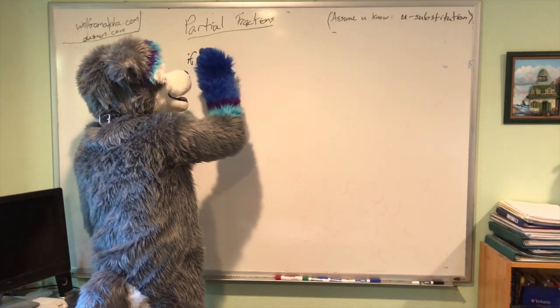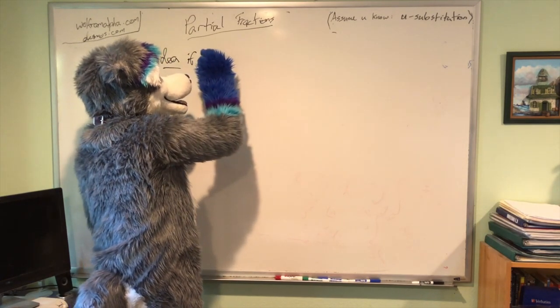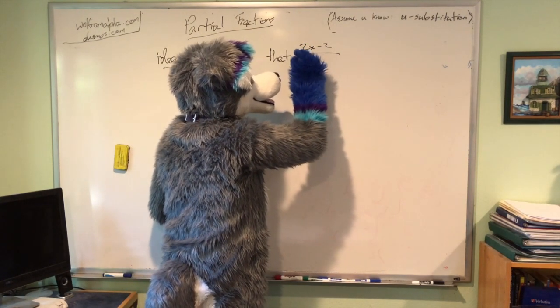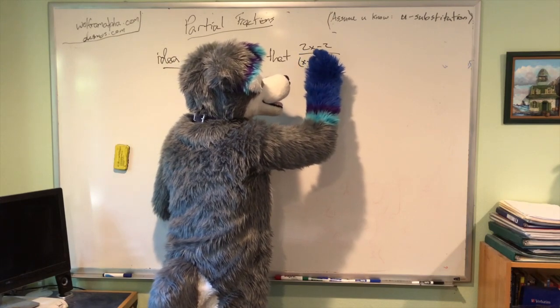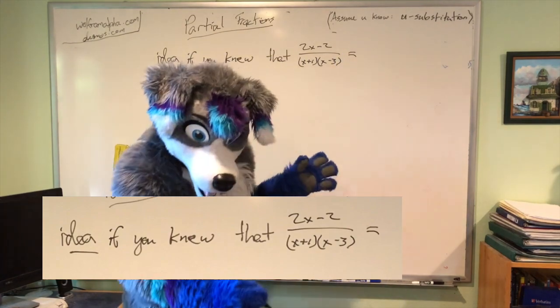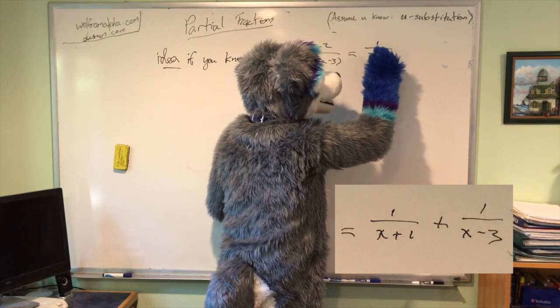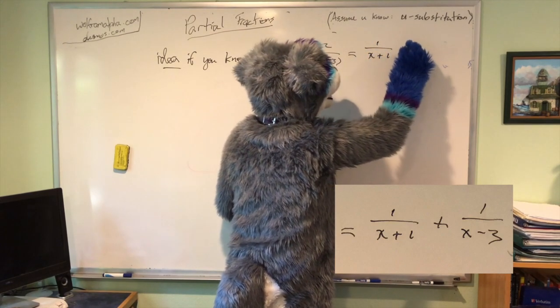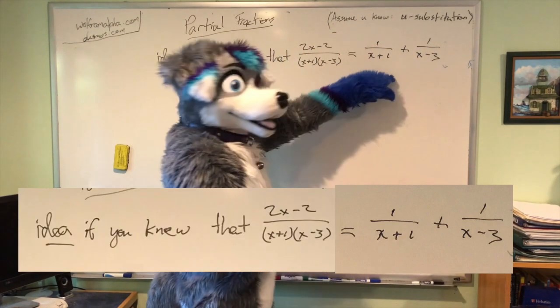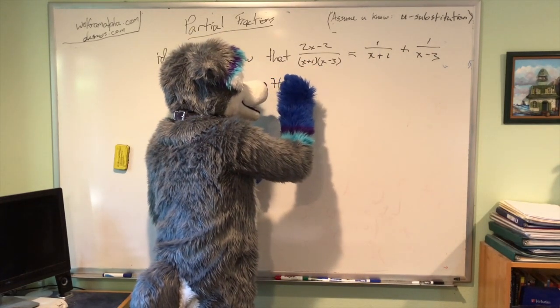So for example, if you knew, so here's the idea, if you knew that 2x minus 2 over (x plus 1) times (x minus 3), if you knew that this actually equals 1 over (x plus 1) plus 1 over (x minus 3), I mean, you can see it works, you add these fractions, you get that. If you knew that, then integrating is easy.